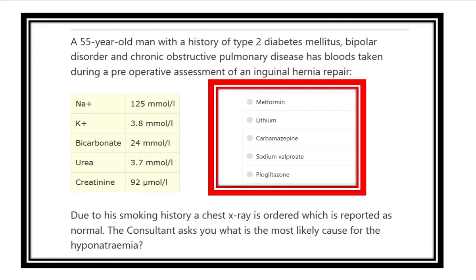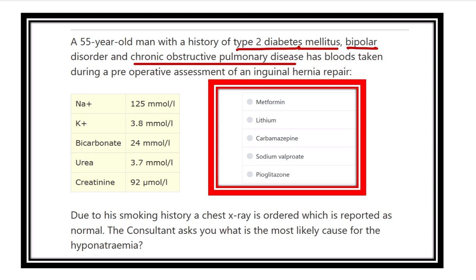Welcome to another question and answer session — this is the physiology portion. A 55-year-old man with a history of type 2 diabetes mellitus, bipolar disorder, and also suffering from COPD, that means chronic obstructive pulmonary disease.